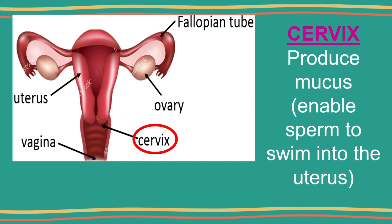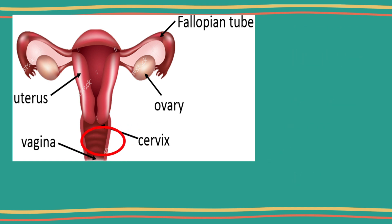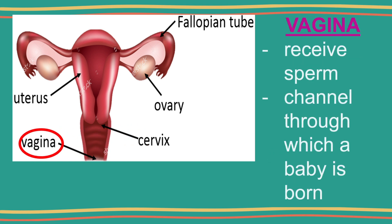The cervix is a ring of muscles at the lower end of the uterus. It secretes mucus which helps the movement of sperms into the uterus.